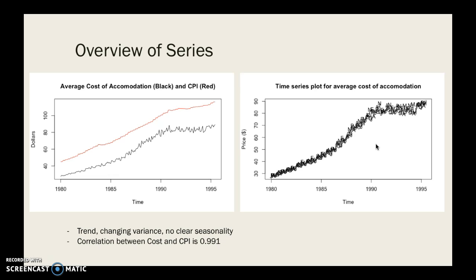Looking at the series, we can see there's a clear upward trend, possible seasonality although it's not that obvious, and it looks like there's changing variance. At the start, for the first five years, the variance is much smaller than it is later on. The variance has increased, so there's definitely some changing variance.